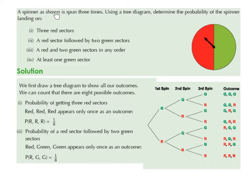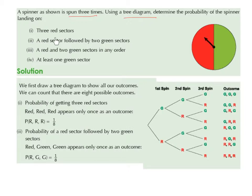A spinner, as shown, is spun three times. Using a tree diagram, determine the probability of the spinner landing on: three red sectors; a red sector followed by two green sectors; a red and two green sectors in any order; at least one green sector.